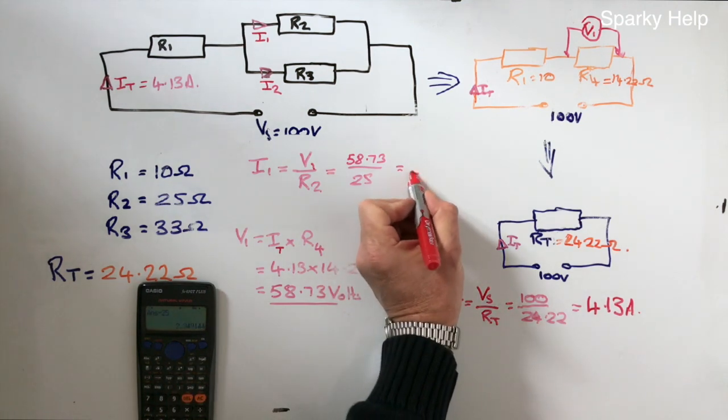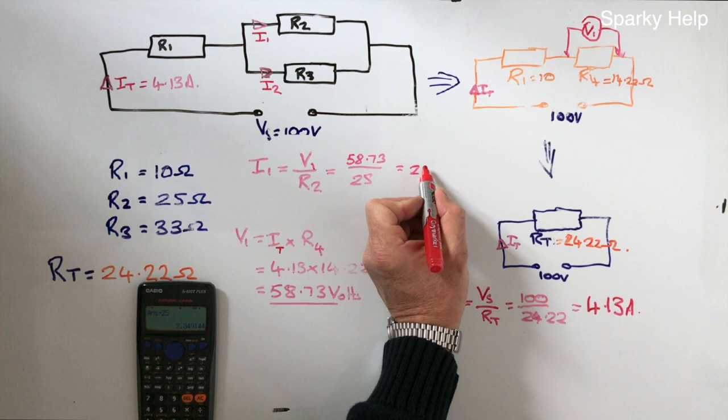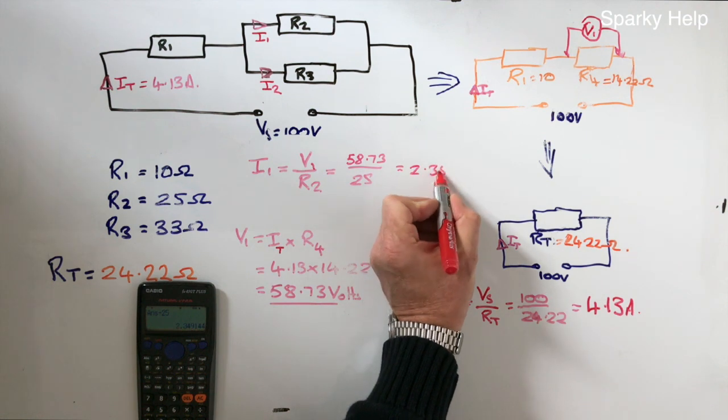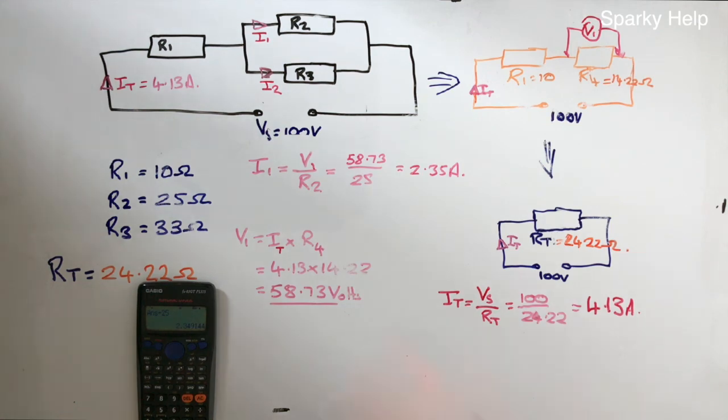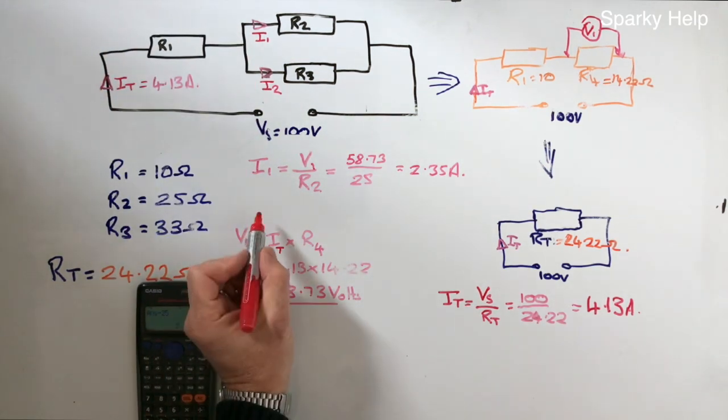We then do 58.73 divided by 25. We get 2.35 amps in that part.